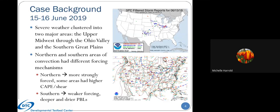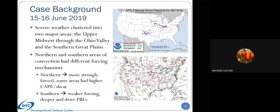As background on the case itself: there were two distinct areas of convection. The northern area was more strongly forced, with some areas of higher CAPE and/or shear. From the SPC storm reports, there were tornado reports as well as high wind and a few hail cases, indicating some supercellular structures. The southern convection was a little weaker forced, with a deeper and drier PBL, producing more wind reports. There was also a bow echo that traversed across Oklahoma.